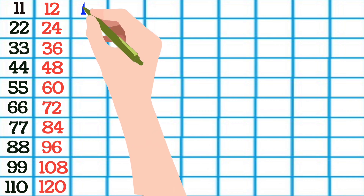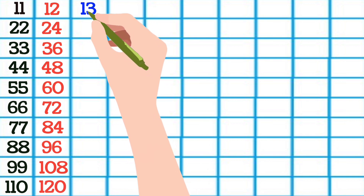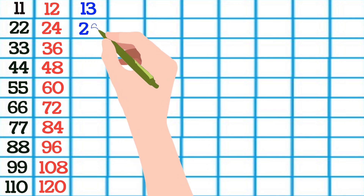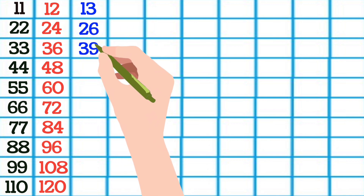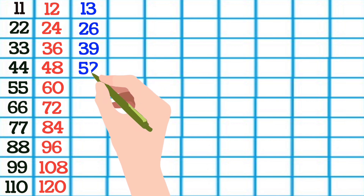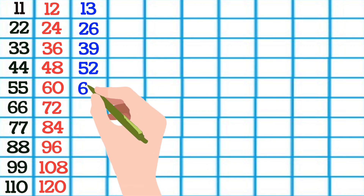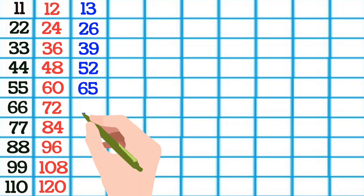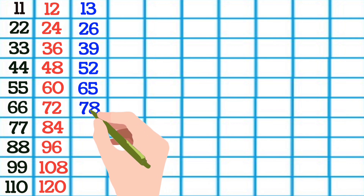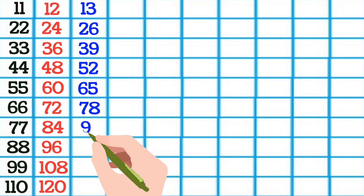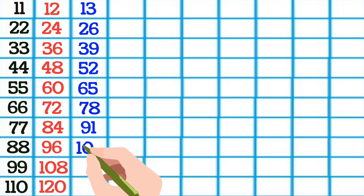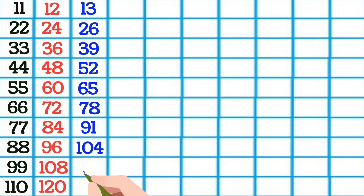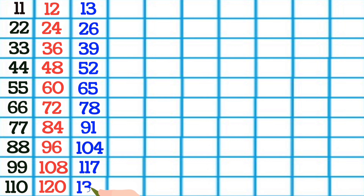13 1s are 13, 13 2s are 26, 13 3s are 39, 13 4s are 52, 13 5s are 65, 13 6s are 78, 13 7s are 91, 13 8s are 104, 13 9s are 117, 13 10s are 130.